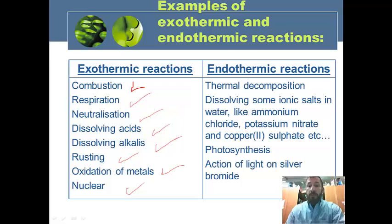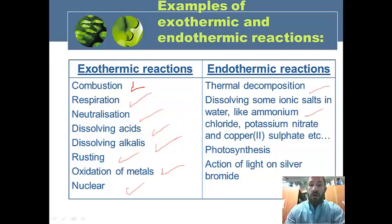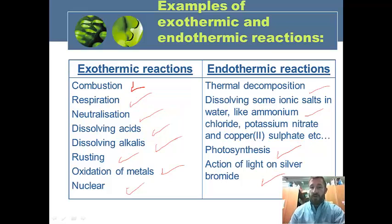Endothermic reactions include thermal decomposition. Dissolving of some ionic salts in water — like ammonium chloride, potassium nitrate, and copper sulfate — are examples. Photosynthesis is endothermic, and the action of light on silver bromide is another example. As you can see, most reactions we commonly discuss are exothermic.